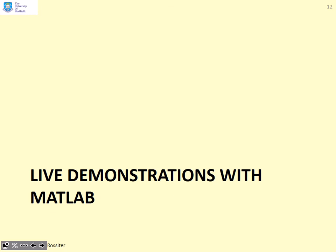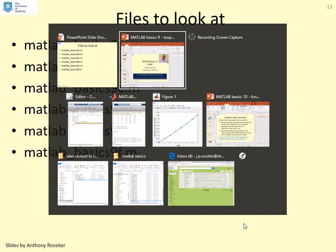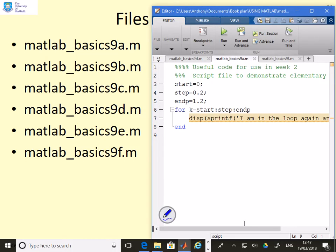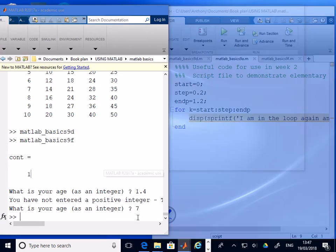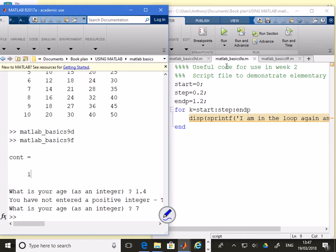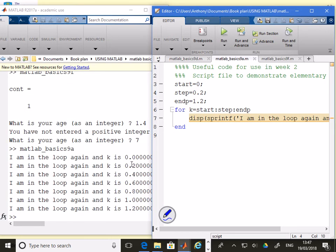Let's move to the live demonstrations. Here's some of the files you may choose to look at. Here's MATLAB Basics 9a. You can see it's the file which has got start, step, end. First I'll just run this one. That's the same as you saw in the notes. But the key thing is I can change it. For example, I can make step equal to 0.3.